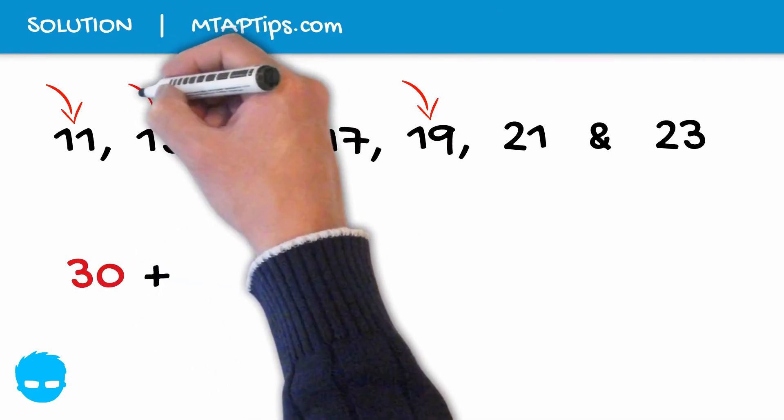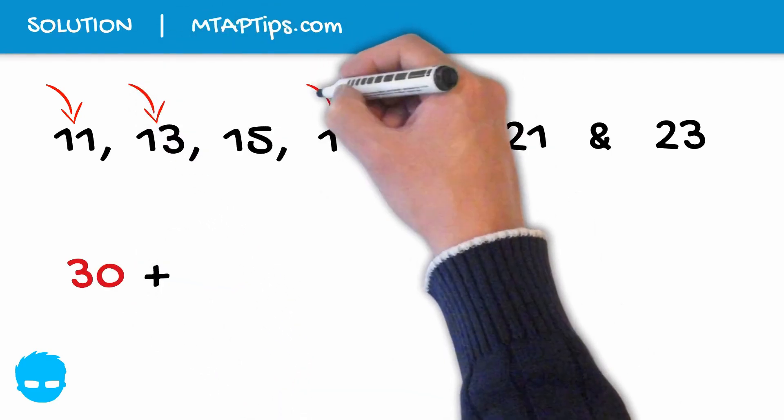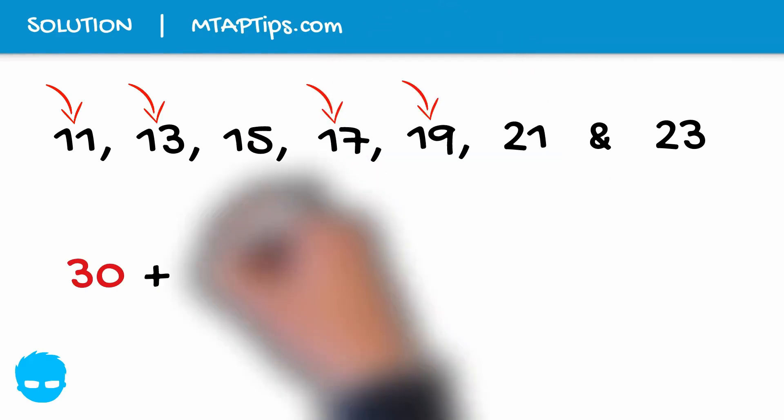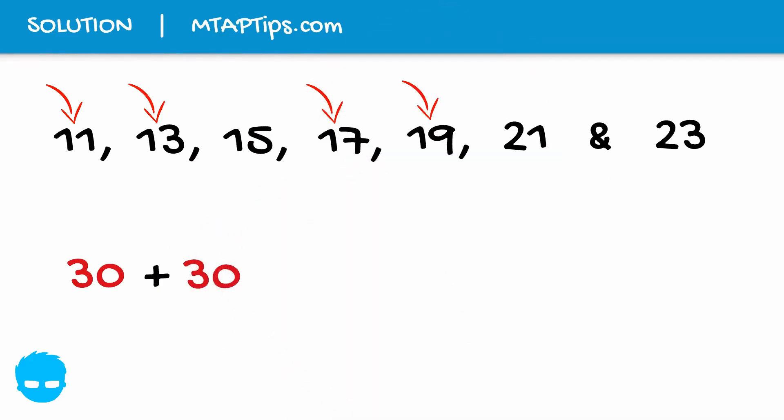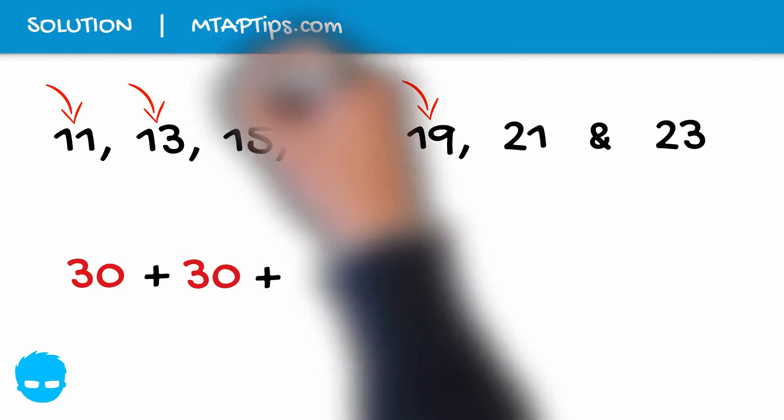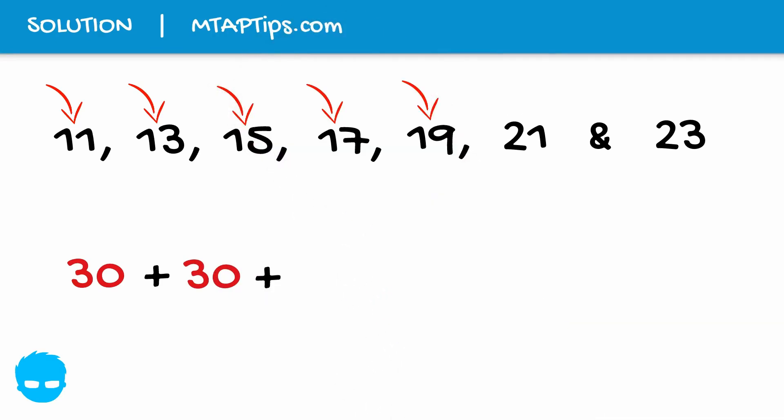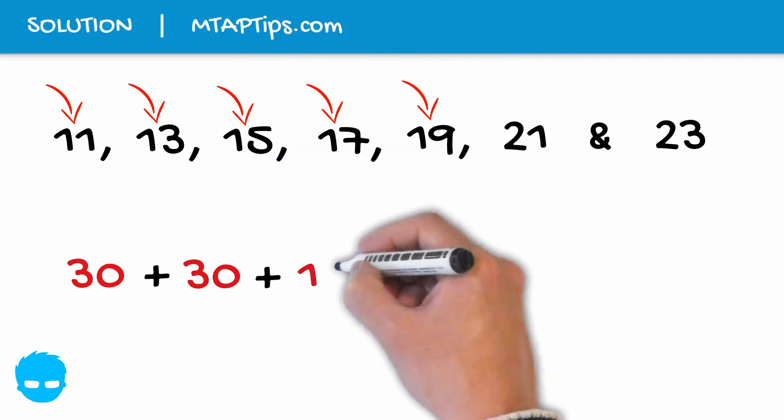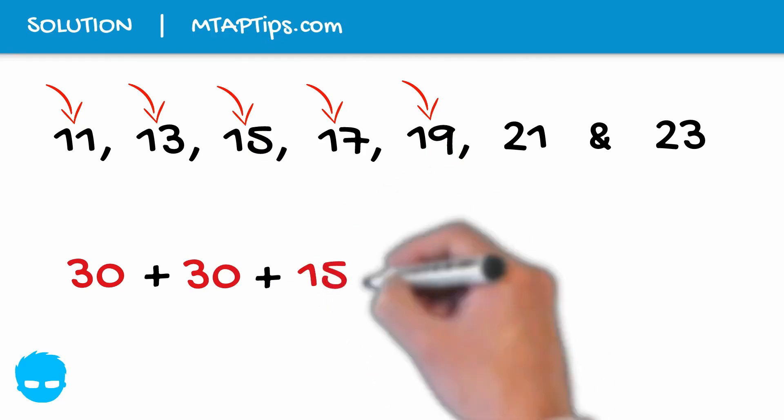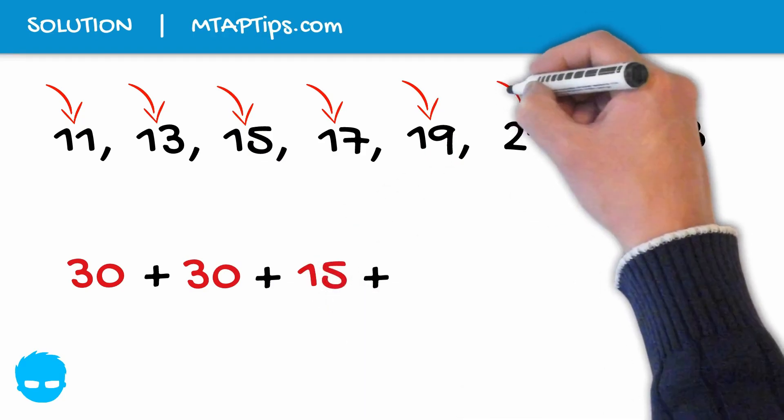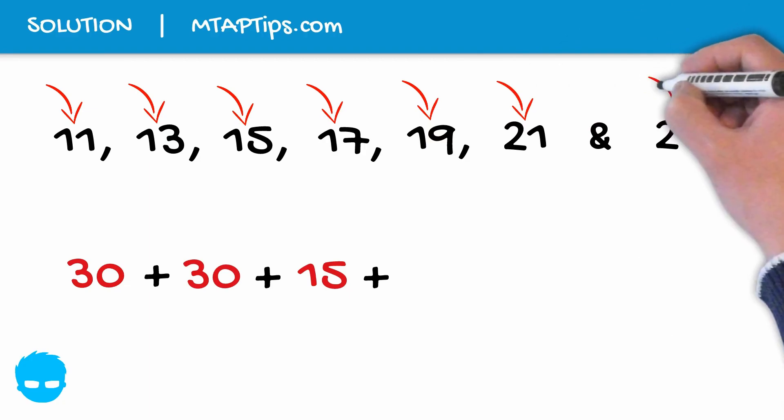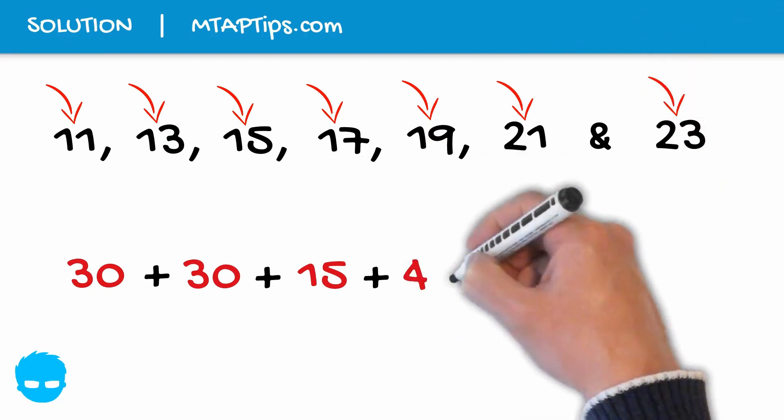Then we add 13 plus 17 is also 30. Then we just bring down 15. And 21 plus 23 is 44.